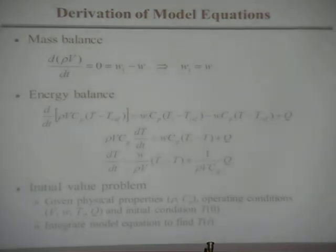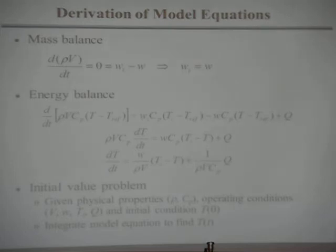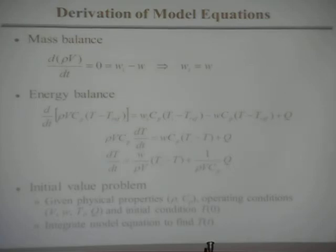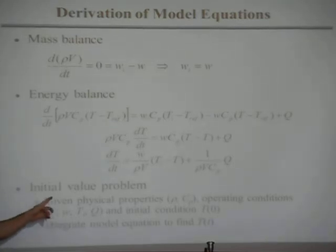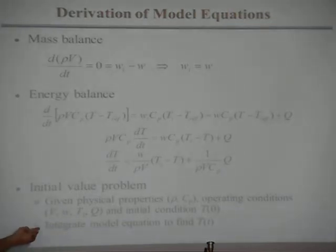So this is an initial value problem. Obviously, I have to give you an initial condition to solve this — the initial temperature, some temperature at time zero, for example. I have to give you the physical properties, rho and C_P. I have to give you what I call the operating conditions: what is the volume, what is the flow rate, what is the inlet temperature, what is the Q? And then you would integrate that equation to find the temperature.